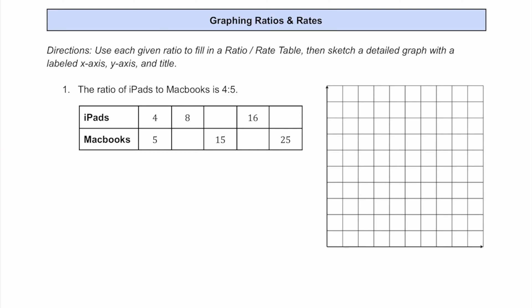Let's practice graphing some ratios and rates on a coordinate plane given an incomplete data table, where we're going to fill it in and then sketch the graph. For number one, we can see here that we have a ratio of iPads to MacBooks. Let's go ahead and start by labeling those. Notice where the iPads and MacBooks are labeled on the table. The ratio here is going to be 4 to 5, so for every 4 iPads we have, we will have 5 MacBooks.